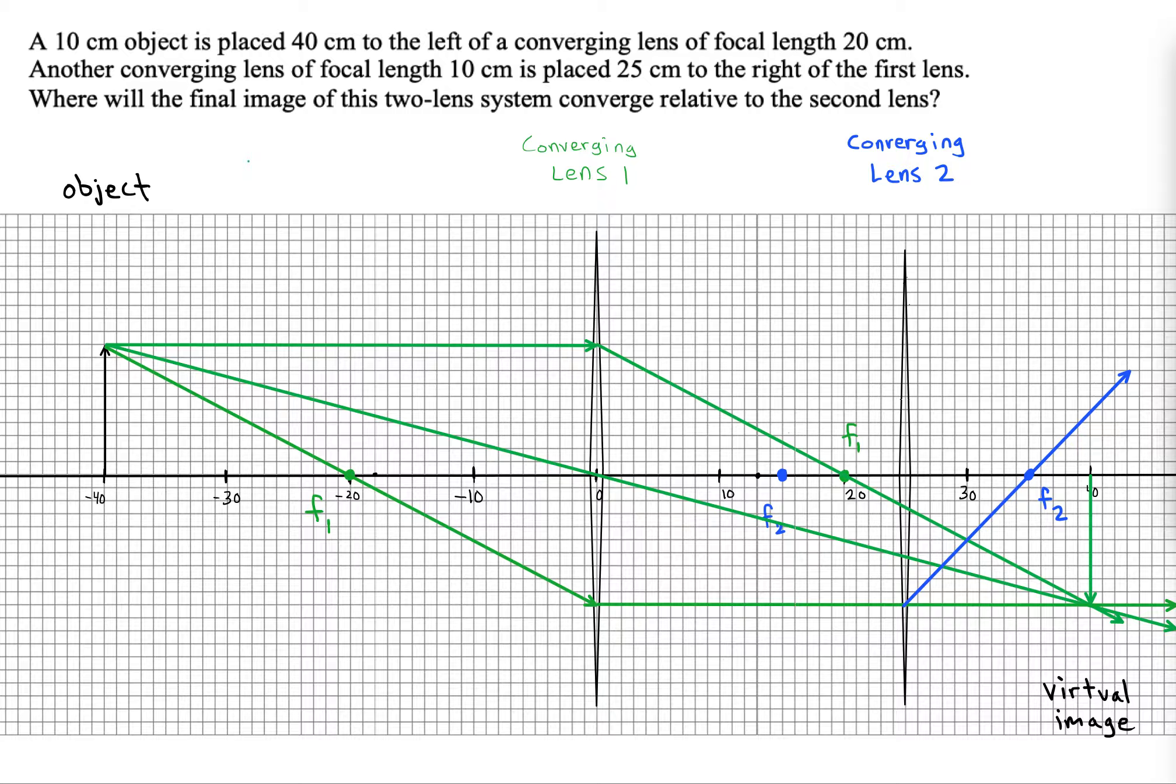So there's one more ray here which would be important. What ray is it? Well, we could draw a ray that comes to that first image, but how does it get there? It gets there by going through the center of lens 2. There would be some ray that would do that.